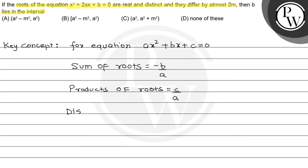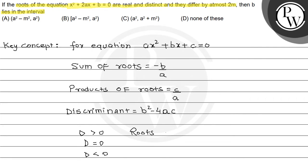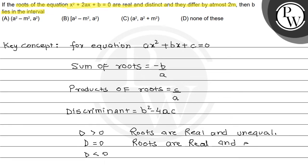The discriminant formula is b² − 4ac. D can be greater than 0, equal to 0, or less than 0. If D > 0, roots are real and unequal. If D = 0, roots are real and equal.